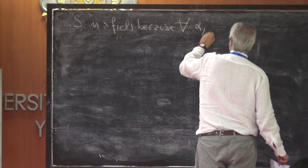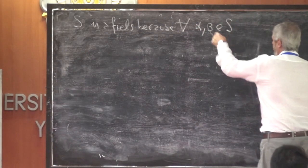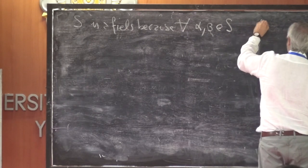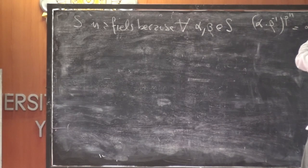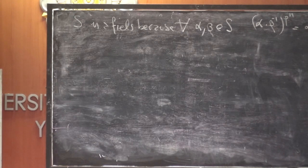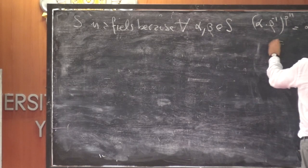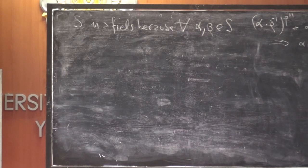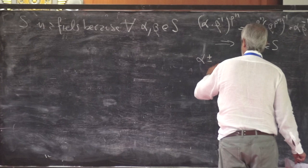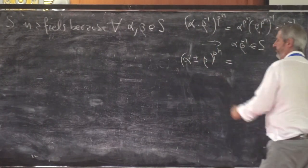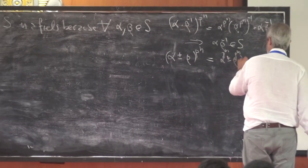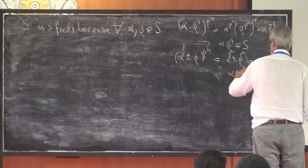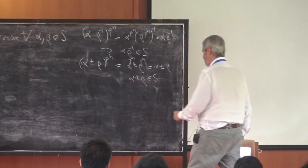S is a field because: for alpha, beta in S with beta nonzero, (alpha * beta^(-1))^(p^n) = alpha^(p^n) * (beta^(p^n))^(-1) = alpha * beta^(-1), so alpha * beta^(-1) is in S. And by the Frobenius formula, (alpha ± beta)^(p^n) = alpha^(p^n) ± beta^(p^n) = alpha ± beta, so alpha ± beta is in S. Therefore S is a field.